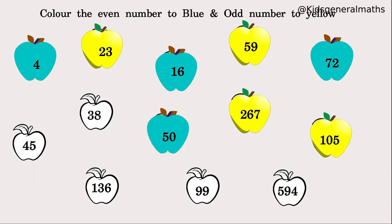Next, 38: it ends with 8. Is 8 an even or odd number? Yes, 8 is an even number, so 38 is an even number — colour it blue. Next, 45: it ends with 5, which is an odd number, so 45 is an odd number — colour it yellow.